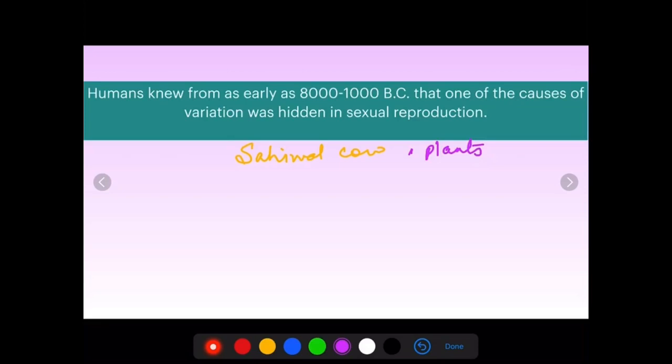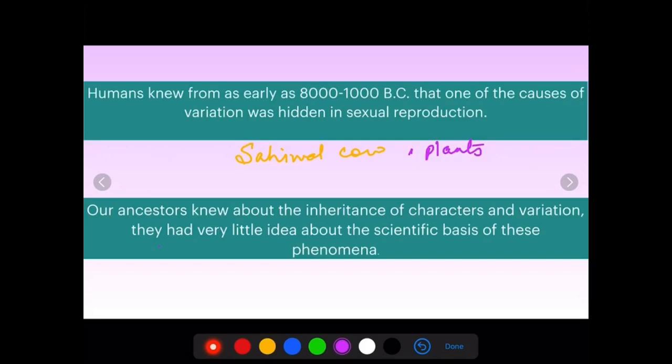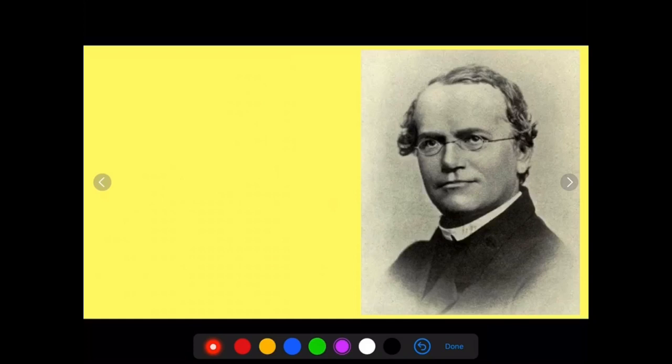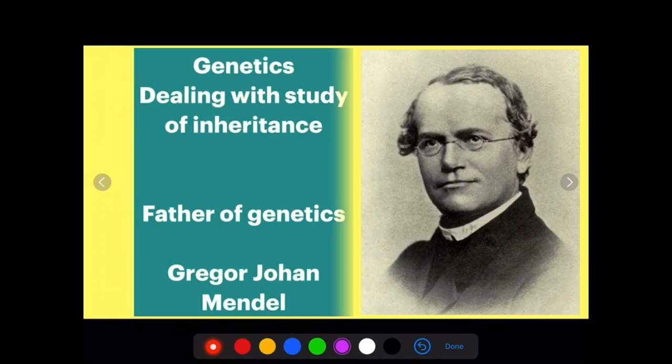Our ancestors knew about inheritance of characters and variations, but they had very little idea about the scientific basis of these phenomena — what actually causes these variations in domesticated plants and animals. The study of variation and inheritance started in the 19th century. Many scientists put forward theories, and the most successful theory of inheritance is that of this person. He is Gregor John Mendel, and his discoveries are studied as genetics.